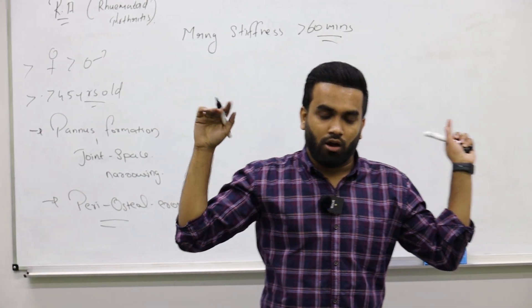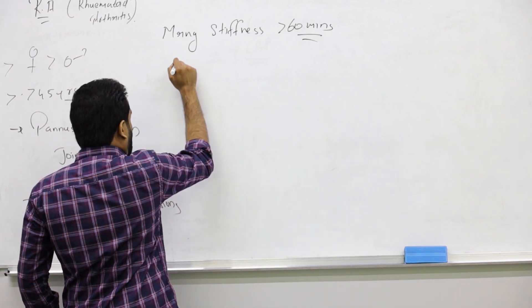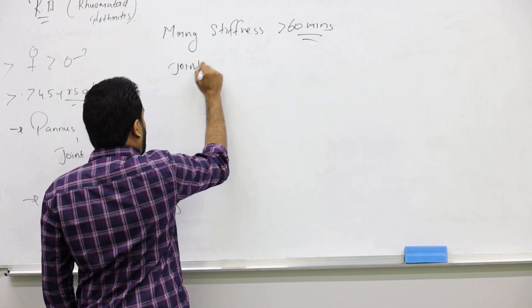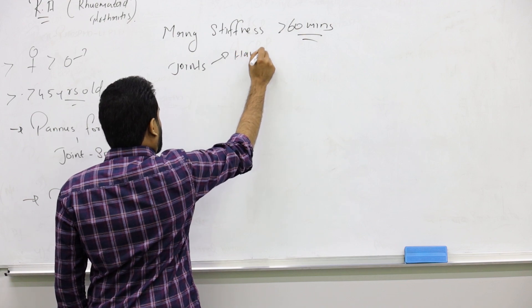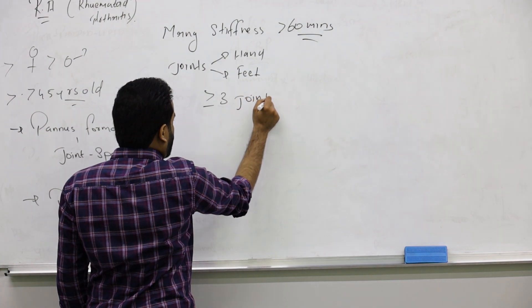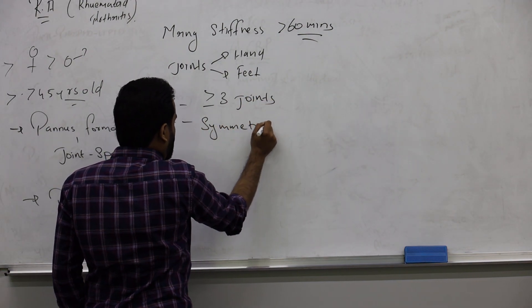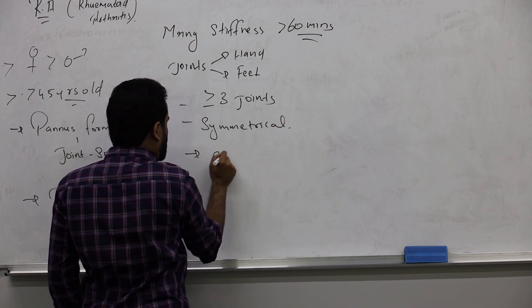Joints of hands will be affected or feet will be affected. More than three joints will be affected symmetrically—symmetrical joint affection.